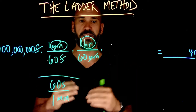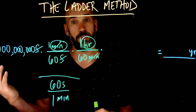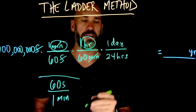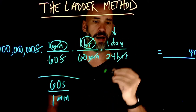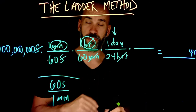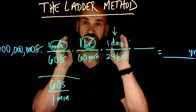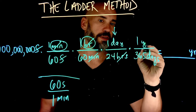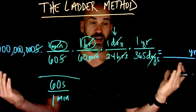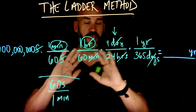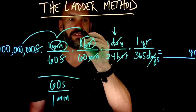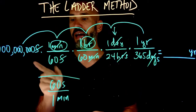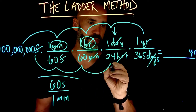We're at hours now and we want to get to years. What's the next biggest unit of time after hours? Days. And we know there are 24 hours in one day — hours cancels with hours and we're left with days. The last one: we know precisely that there are 365 days in one year, and the days cancel out. To get the answer, multiply everything on top and divide by everything on the bottom: a billion divided by 60, divided by 60, divided by 24, divided by 365.